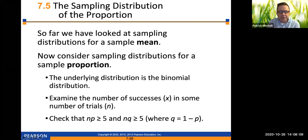Hi, everybody. It's Professor Mitchell. We are finishing up Chapter 7 today by looking at the sampling distribution of the proportion. Remember, in the last section, we looked at the sampling distribution for sample mean. Now consider sampling distributions for a sample proportion.